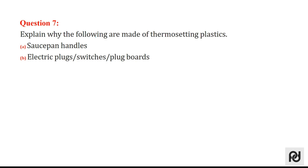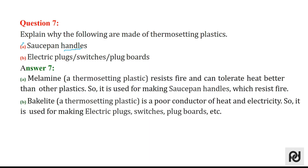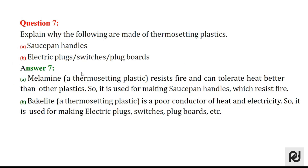Explaining why the following are made of thermosetting plastics: saucepan handles are made of melamine, and electric plugs are made of bakelite. Melamine is a thermosetting plastic which resists fire and can tolerate heat better than other plastics. Bakelite, a thermosetting plastic, is a poor conductor of heat and electricity, so it is used for making electric plugs, switches, plug boards, etc.